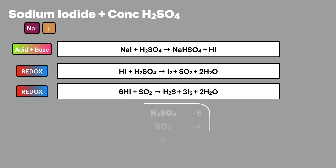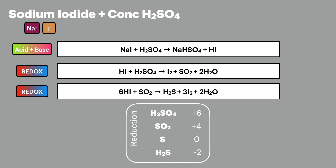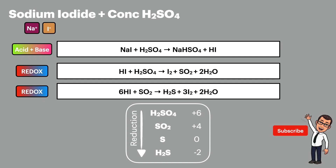Sulfur can have four different oxidation states in different compounds, and it's possible to make any of these sulfur-containing compounds in a reaction with sodium iodide. In the next episode I'll explore the half equations for making each individual compound, which is sometimes asked in exam questions.